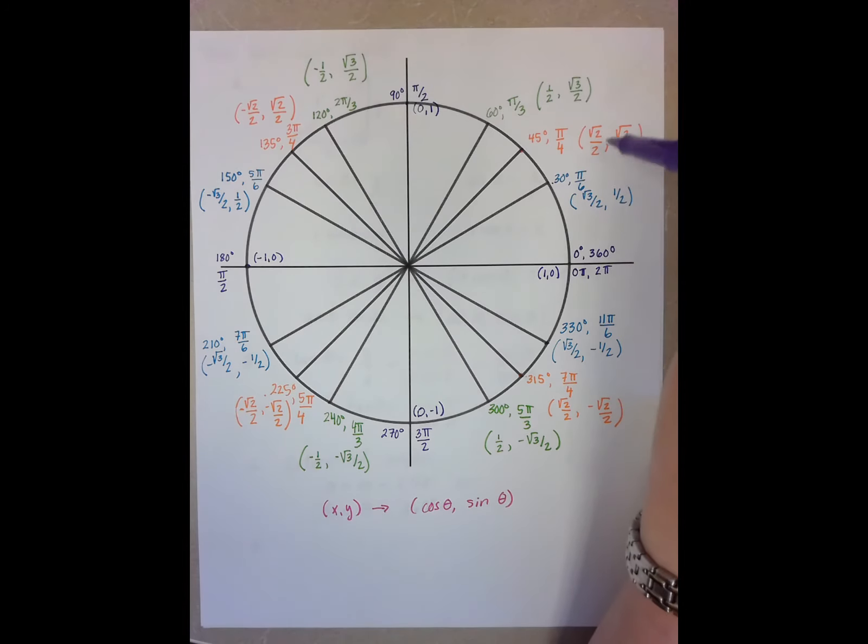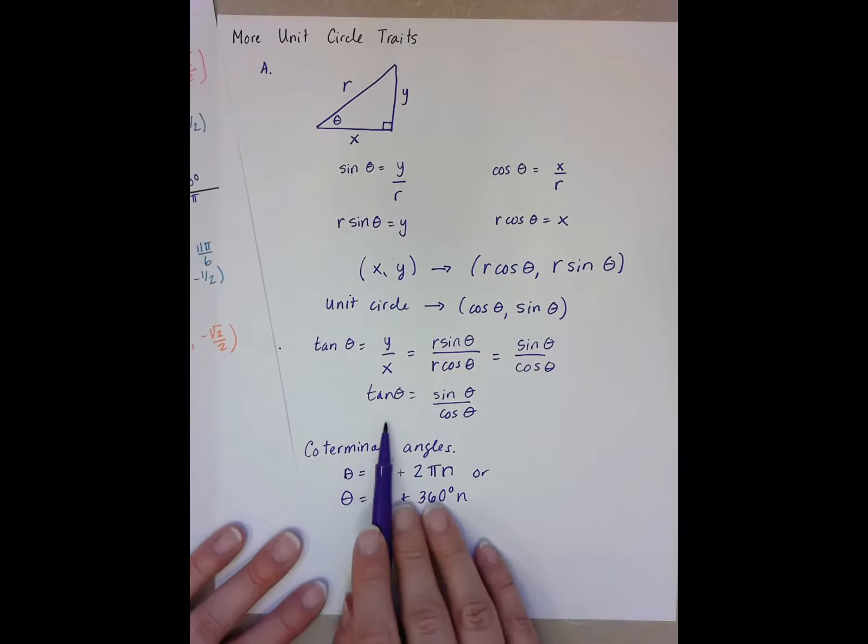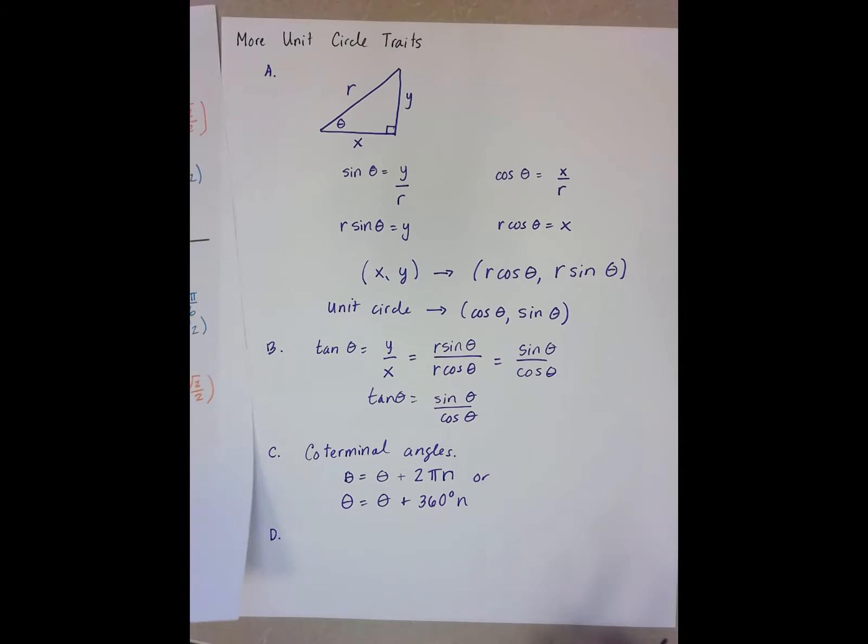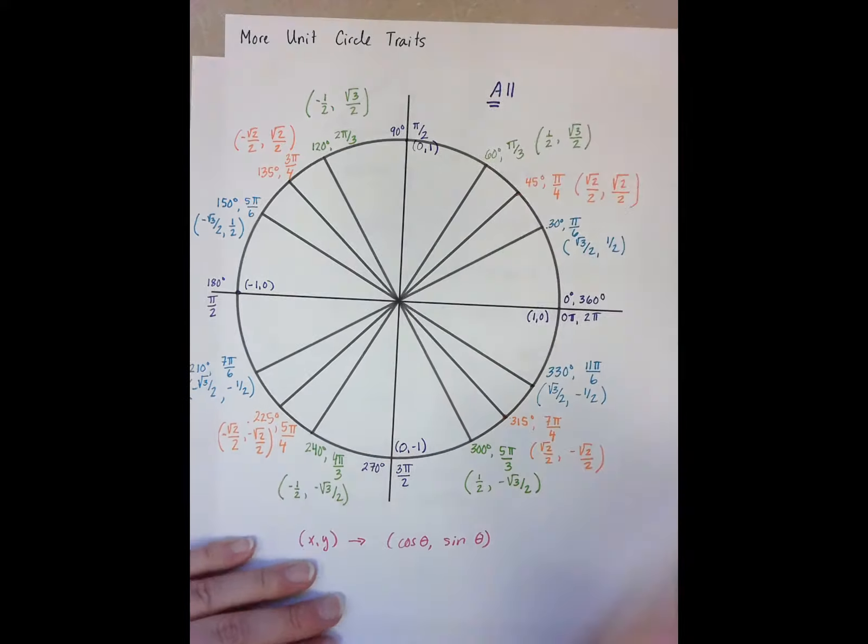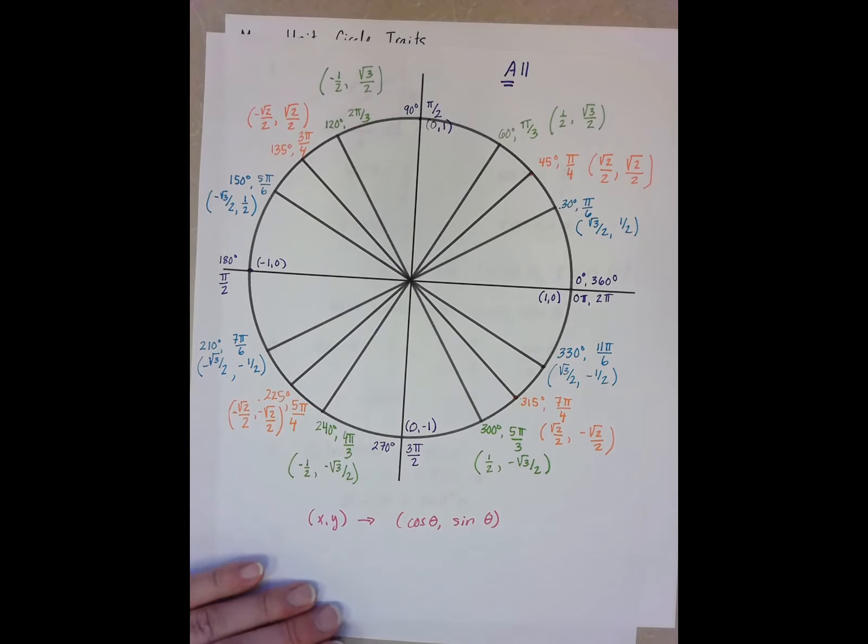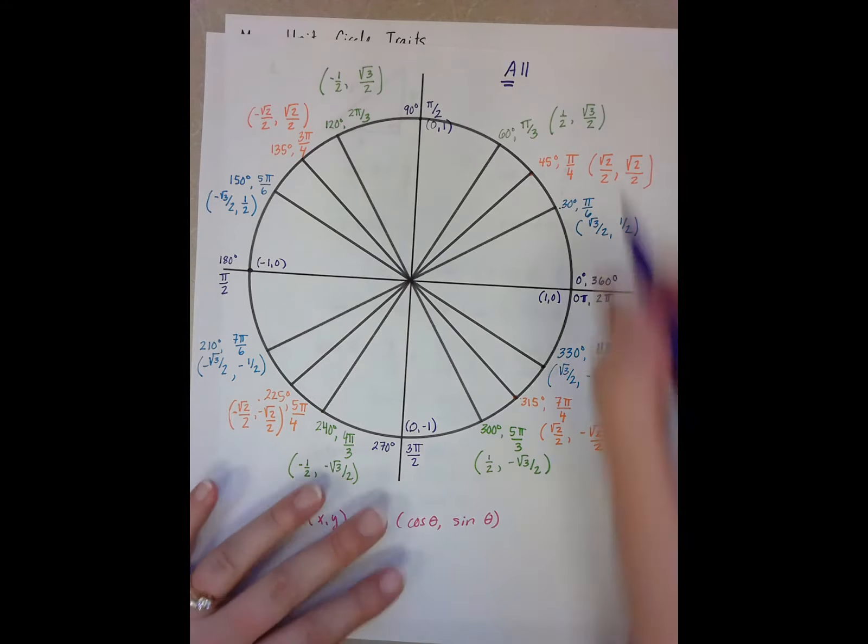So if I notice here, all of my cosines here are positive, so are my sines. And since we know that tan is sine over cosine, I can say that all of my trig functions are positive in the first quadrant.